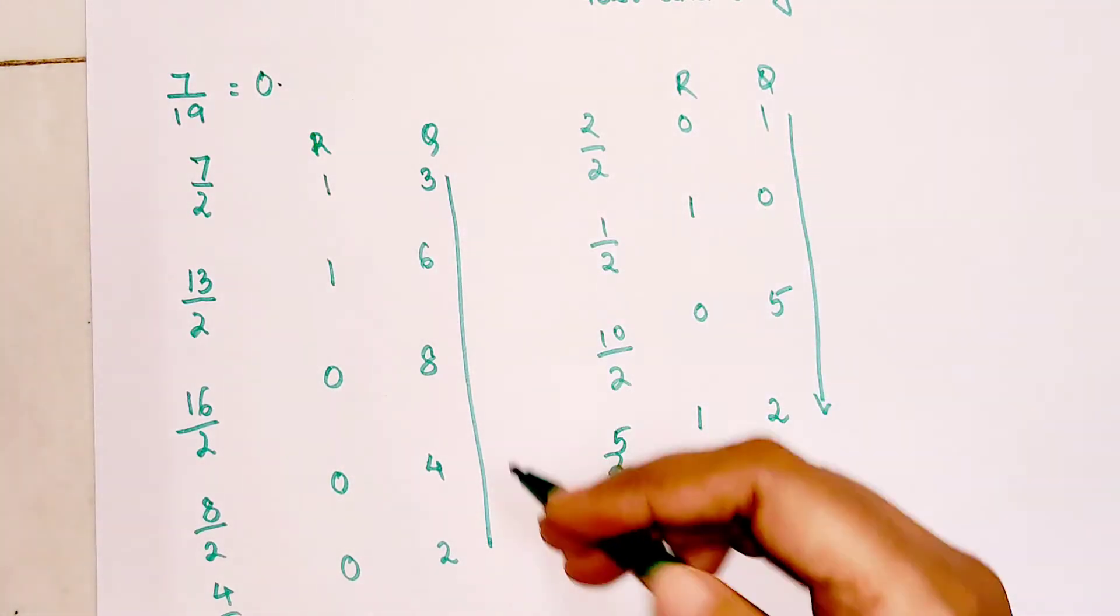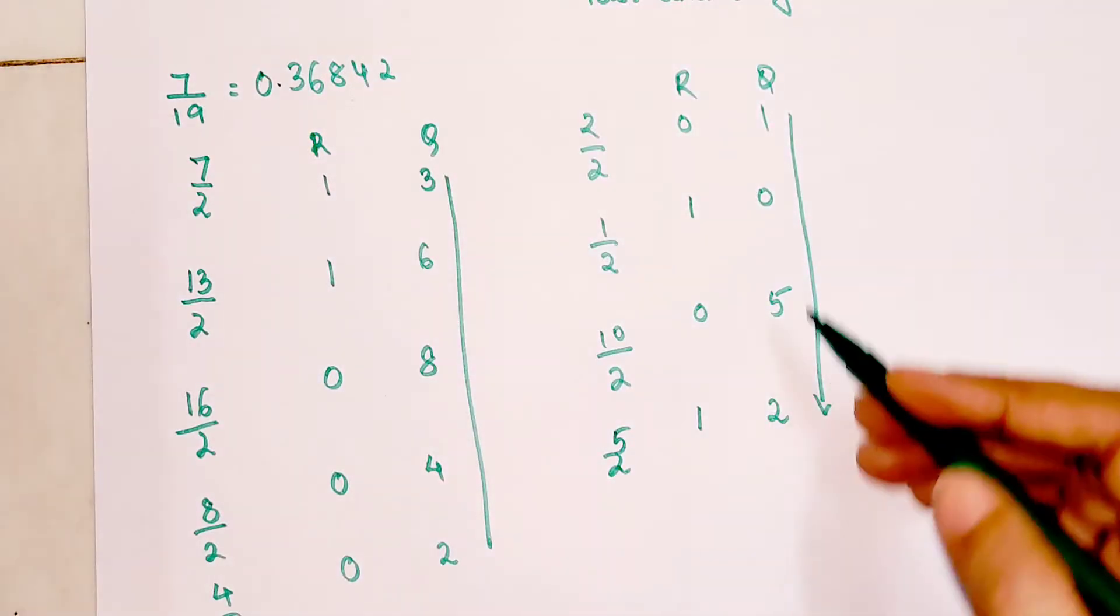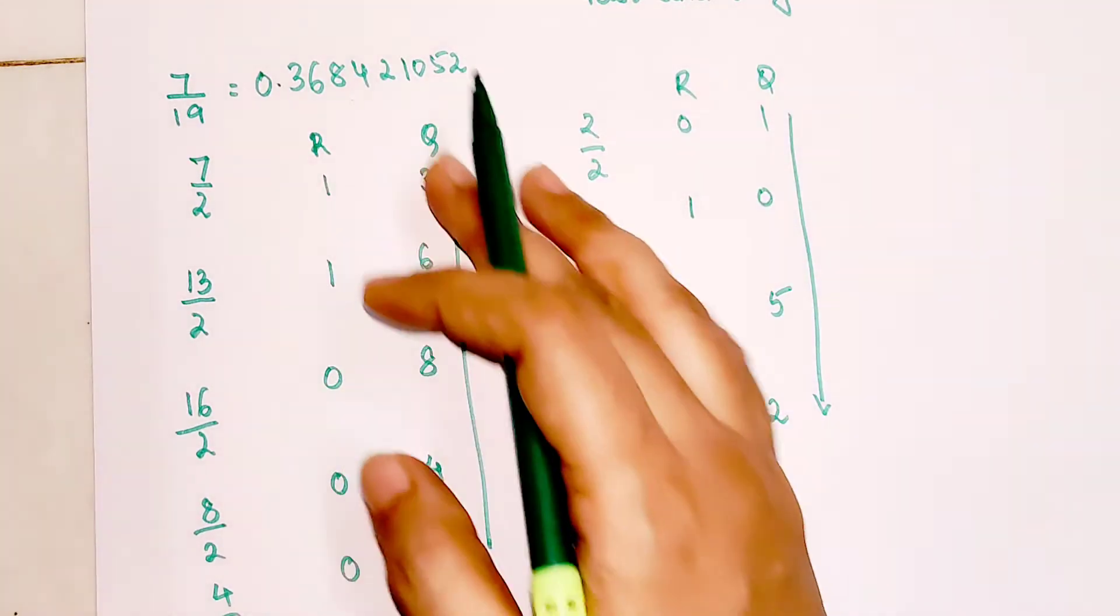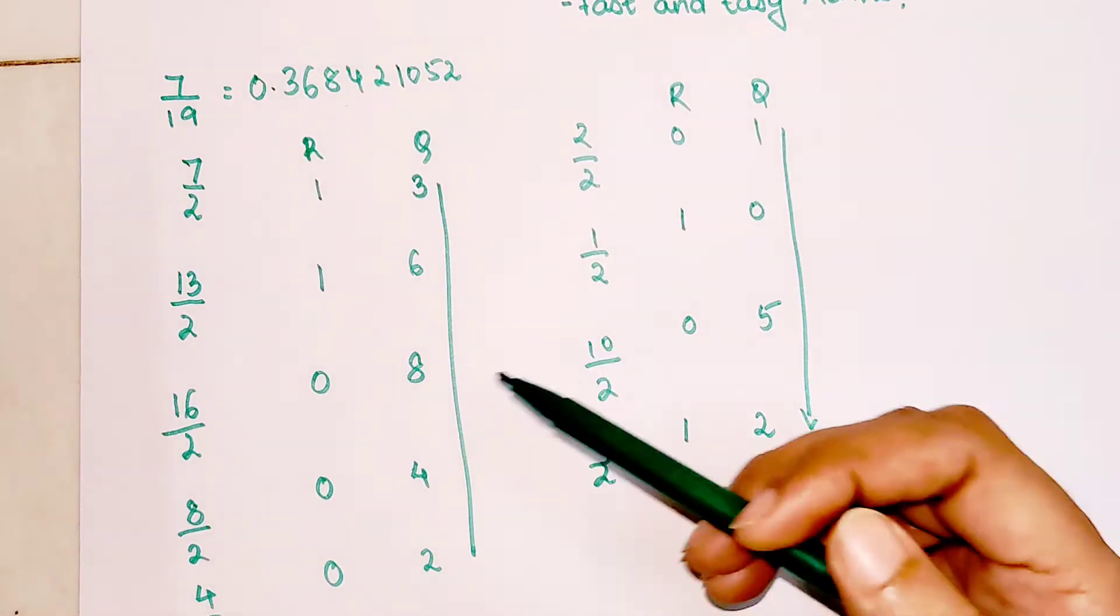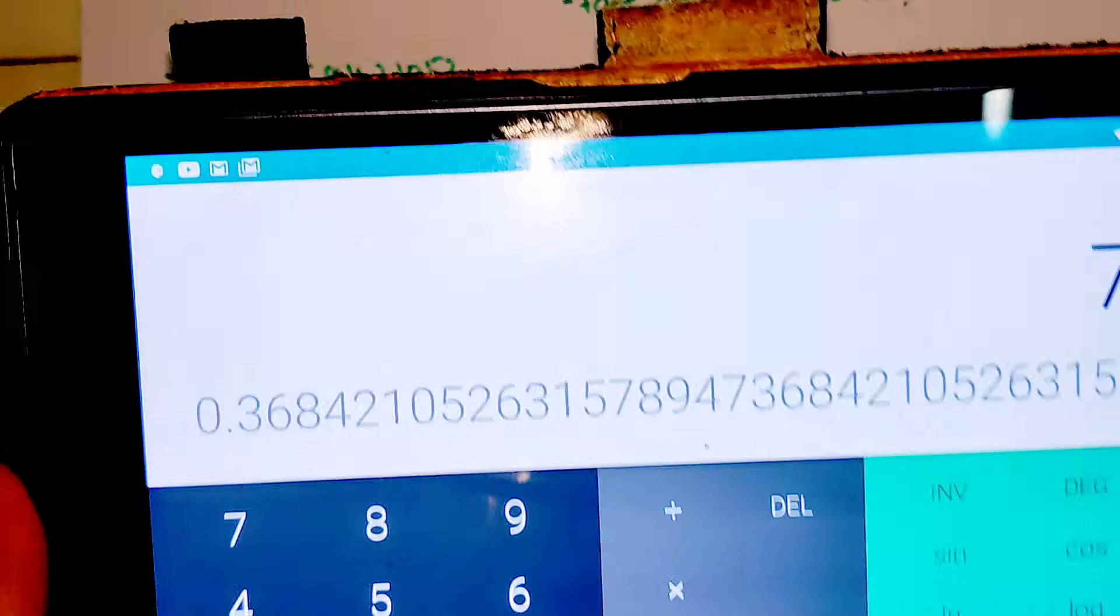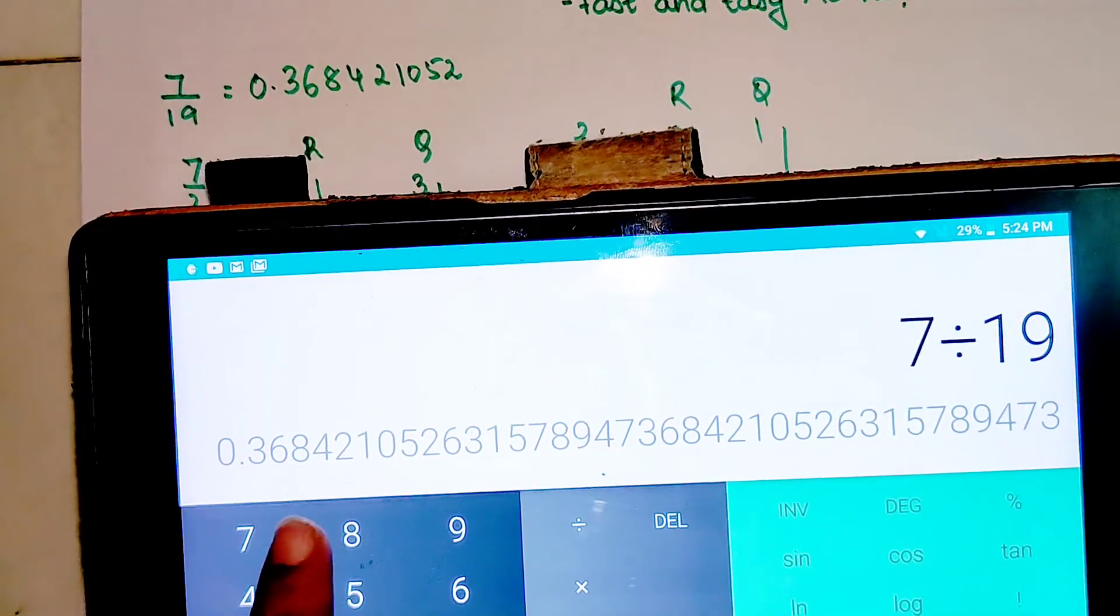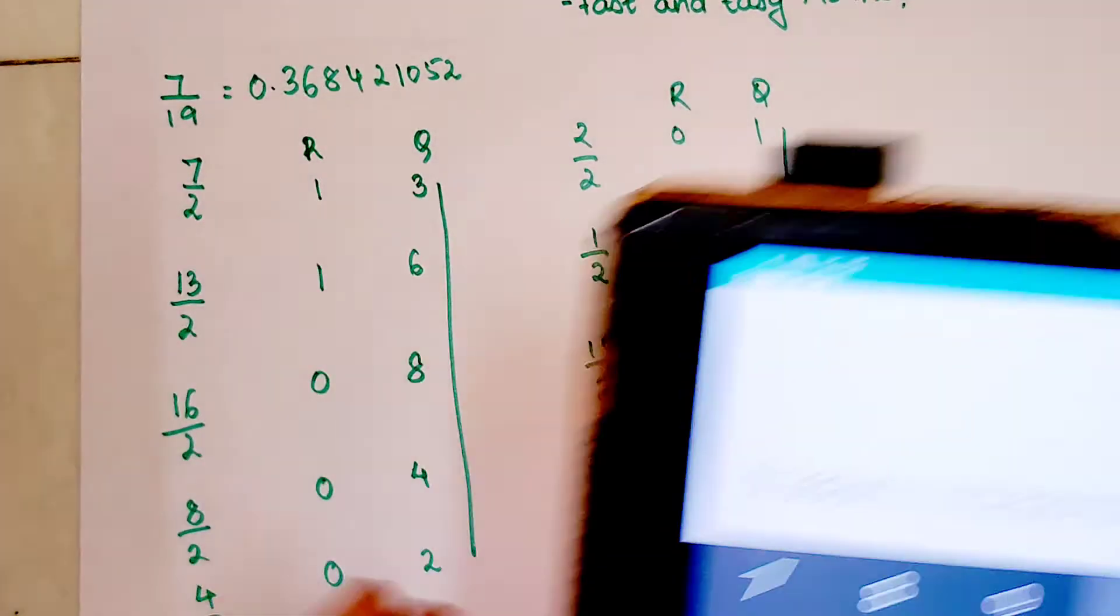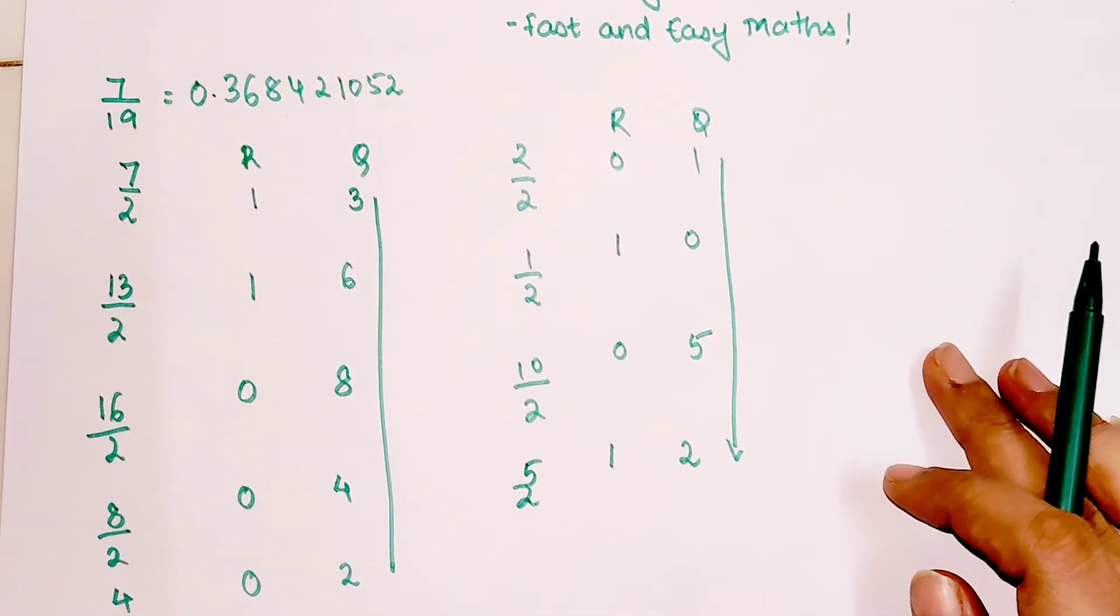Since 7 is less than 19, you start with 0 point, and this column is your answer going from top to bottom: 3, 6, 8, 4, 2, 1, 0, 5, 2. When I divide 7 by 19, the answer is 0.36842105, and so on.